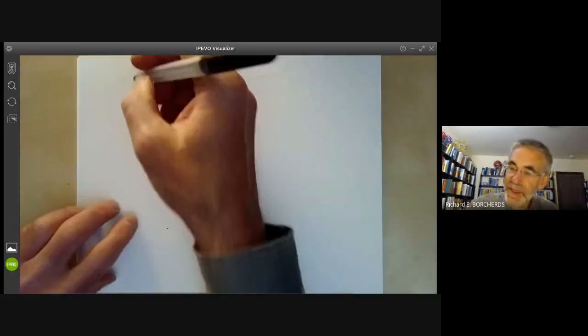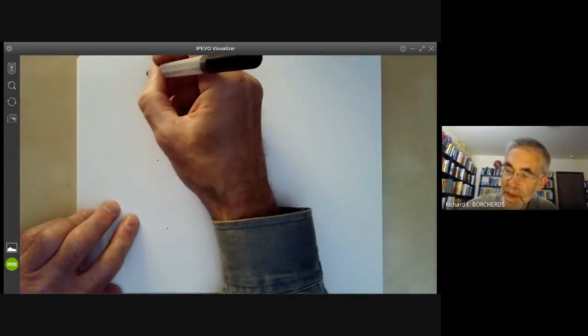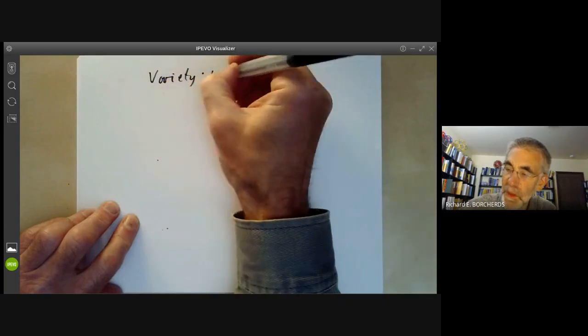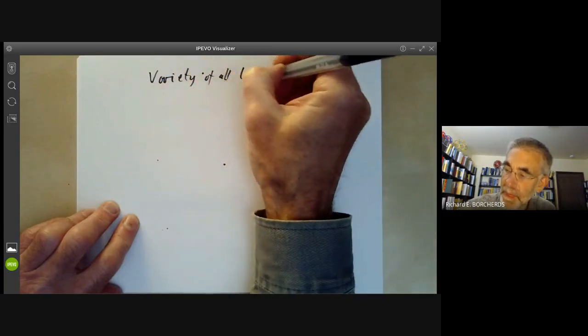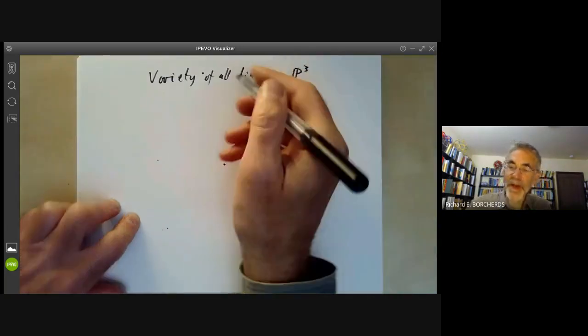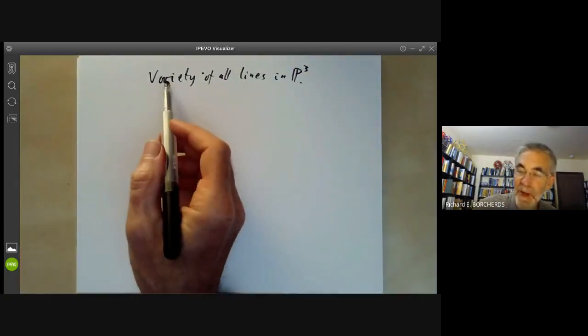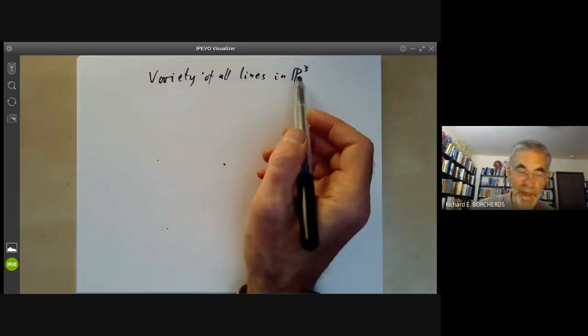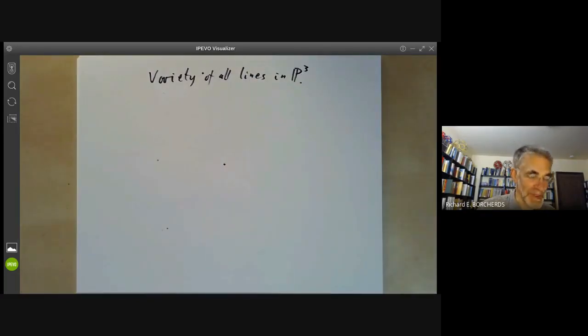The next example is going to be the variety of all lines in P3. So the idea is we want to find a variety whose points correspond to the straight lines in P3. Let's stop and just think about what the dimension of it should be.